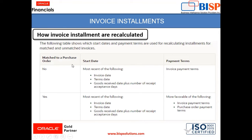In the same manner, if you don't have a purchase order matched, the start date will be the most recent of the following: invoice date, terms date, or goods received date plus number of received acceptance days. The payment term will be the invoice payment term. So using these start dates and payment terms, the invoice installment is recalculated.